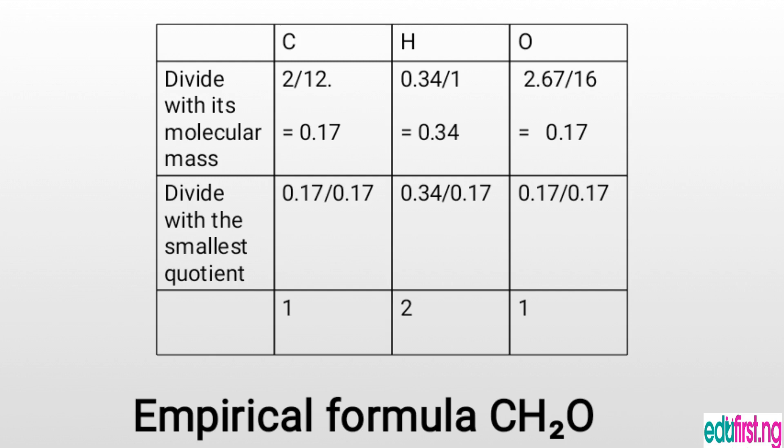So in this table we have elements C, H, O listed. The mass of carbon is 2 grams, hydrogen is 0.34, and oxygen is 2.67. Dividing by their relative atomic masses — 12, 1, and 16 respectively — we get: carbon = 0.17, hydrogen = 0.34, and oxygen = 0.17. The lowest number among these results is 0.17, so we divide all by 0.17.